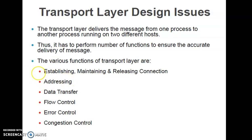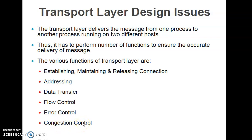You also need data to send. Data transfer, flow control, and error control are all important. Flow control deals with matching the speed of the sending device with the receiving device. Error control ensures the data sent is accurate and without errors. Congestion control ensures congestion does not occur in the network. All these functions are taken care of by the transport layer and are termed design issues.